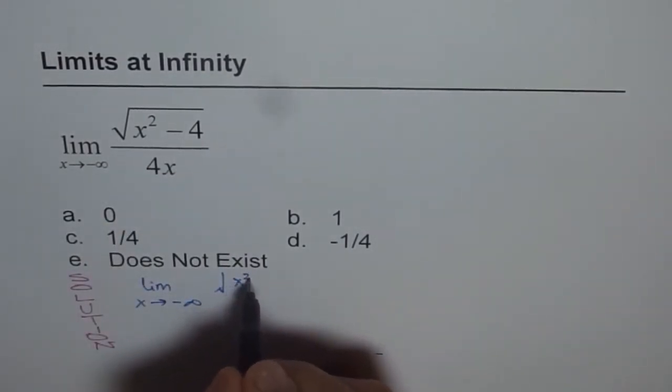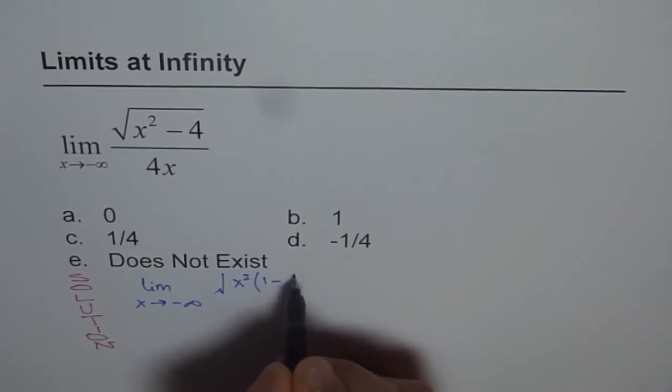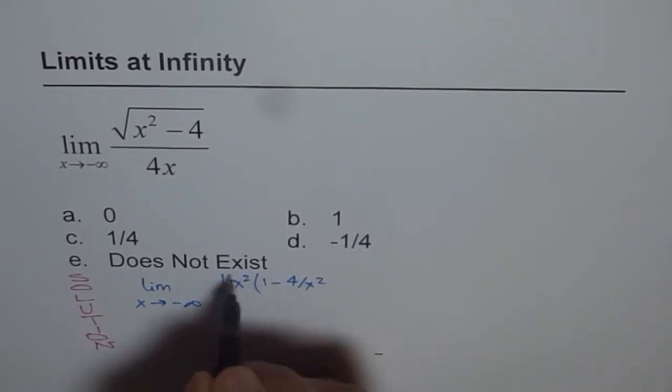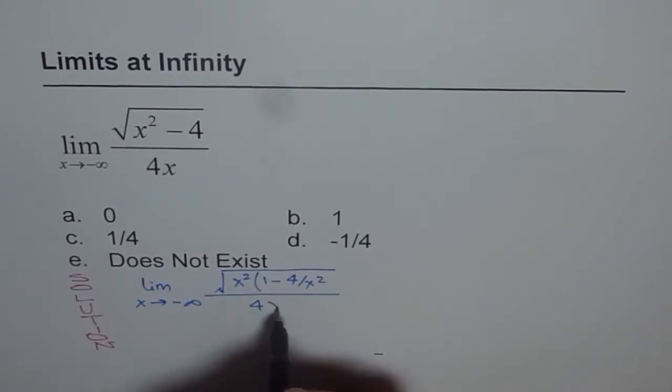If I factor out x squared, what do I get? I get 1 minus 4 over x squared, right? Everything within the square root, divided by 4x in the denominator.